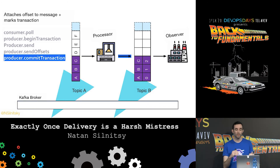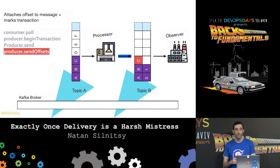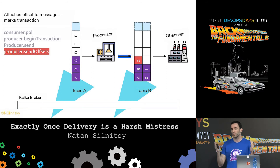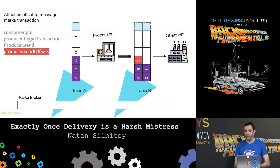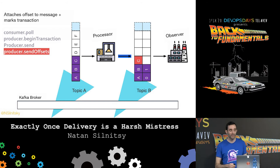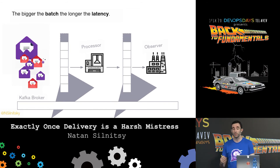The processor polls the consumer reading the message, begins the transaction, sends the message over to Topic B, then sends the offset so we know it's not a duplicate, and then commits the transaction - only then can the observer read the message. If there was some issue where messages were sent but offsets failed and the processor needed to restart, it will wake up and understand that a transaction was in progress but didn't finish. It can cancel it and start over, and all this time the observer hasn't yet seen the message.